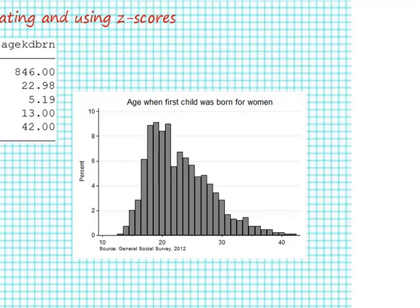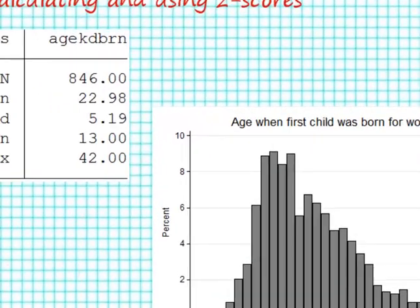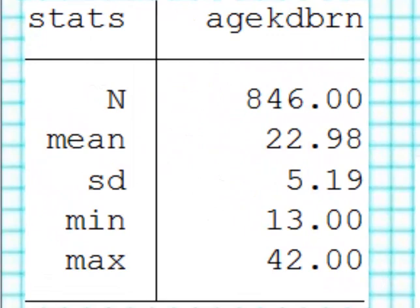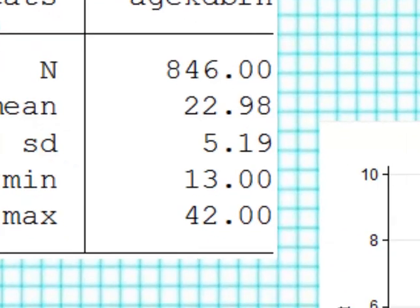I've restricted my sample to only the women in 2012. You can see the descriptive statistics on the left. We have 846 women with an average age of approximately 23 years old when the first child was born, with a standard deviation approximately 5.2.